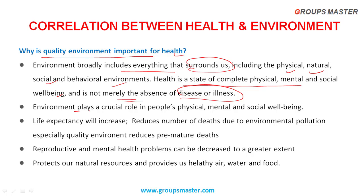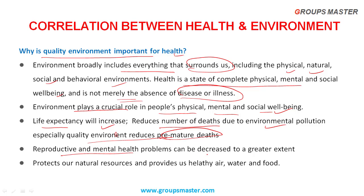Environment plays a crucial role in people's physical, mental and social well-being. That's why quality environment matters. Life expectancy at birth will increase with a quality environment, and it reduces the number of deaths due to environmental pollution - especially premature deaths. Reproductive and mental health problems can be decreased to a greater extent. Quality environment protects our natural resources and provides healthy air, water, and food.